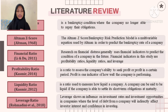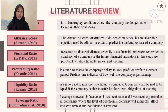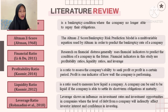The profitability ratio is a ratio to assess the company's ability to seek profit in a certain period — profit is one indicator of how well the company is performing. The liquidity ratio is used to measure how liquid a company is; a company can be said to be liquid if it is able to settle its short-term obligations at maturity. The leverage ratio shows the influence of investment rates and investment opportunities in companies, where the level of debt from a company will indirectly affect investors' interest and confidence in investing.